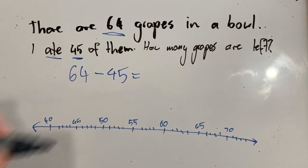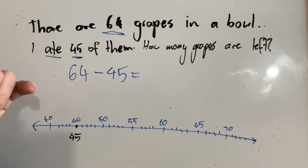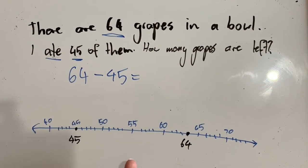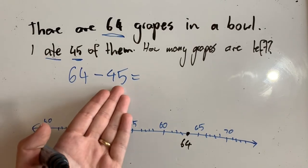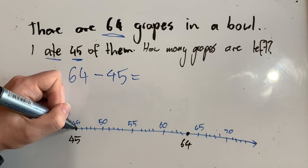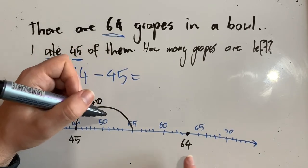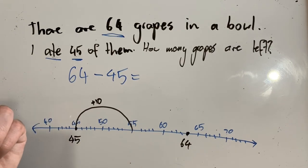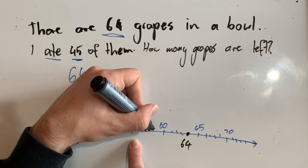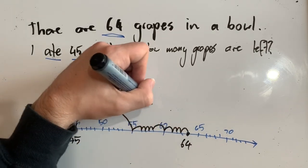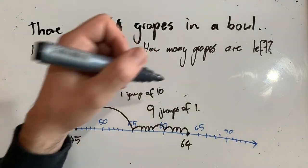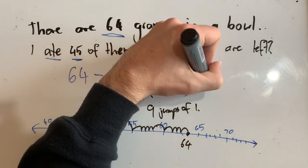I'm starting on 45 — the number I'm taking away from the bigger number — and I need to know where I'm finishing: 64. I want to know the gap, the difference between these two numbers, because that is what I will get if I take 45 from 64. I'll jump by 10s first: a 10 jump takes me to 55. I can't quite jump another 10, so I'll make nine small jumps: 56, 57, 58, 59, 60, 61, 62, 63, 64. I've got one jump of 10 and nine jumps of one, so 10 plus 9 is 19.